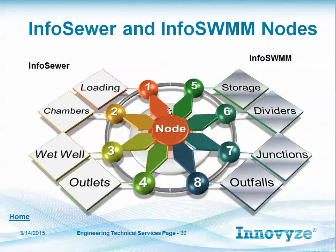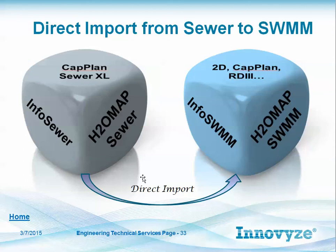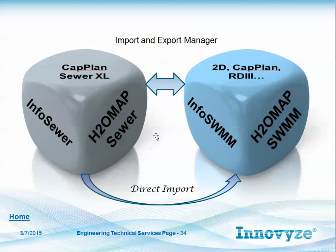This contrasts InfoSewer and InfoSWIM nodes. InfoSewer has loading, chamber, wet well, and outlet nodes. InfoSWIM has storage, dividers, junctions, and outfalls. You can directly import InfoSewer or H2O MapSewer to InfoSWIM or H2O MapSWIM — the nodes, links, dry weather flow, pumps, and other things come in very nicely. If you go from InfoSWIM back to InfoSewer, however, you have to use the import and export CSV file via the import and export manager.